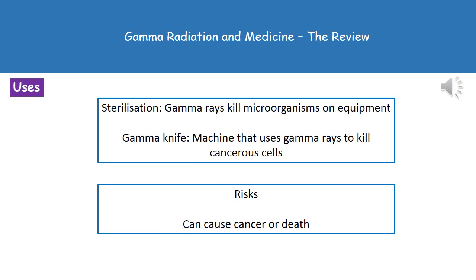In terms of the uses of gamma radiation, we can use it, first of all, to sterilize equipment, because the gamma rays will kill microorganisms present on the equipment. Secondly, we can use it in a machine called a gamma knife, which uses gamma rays to kill cancerous cells — so it's basically a form of cancer treatment.